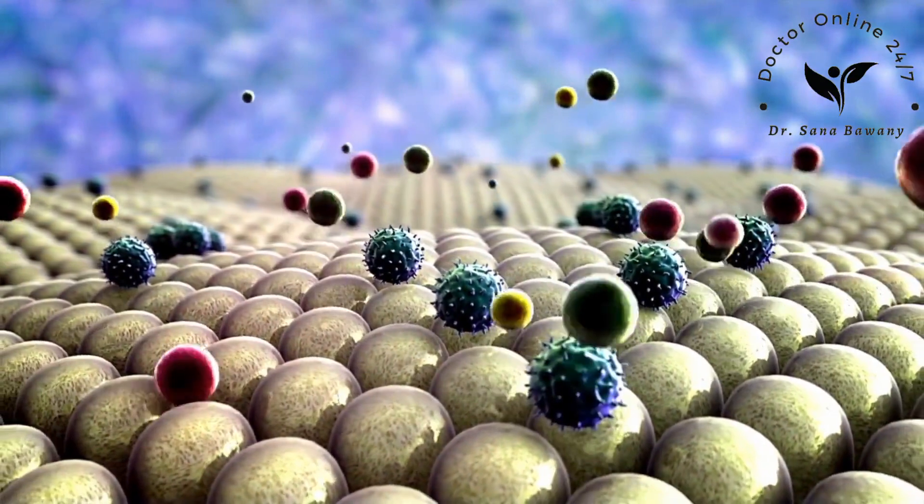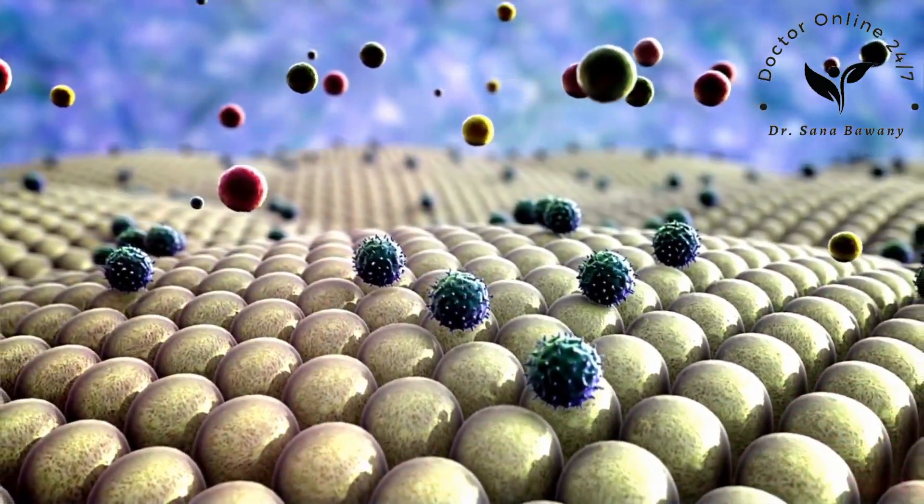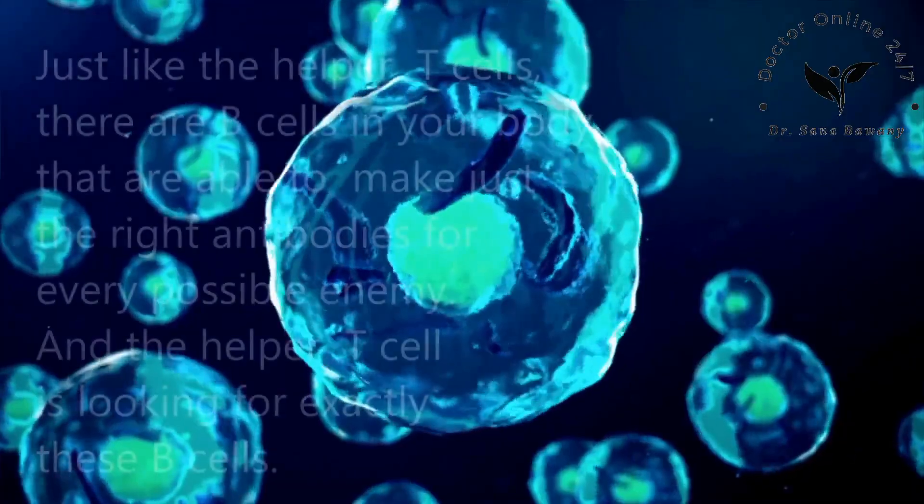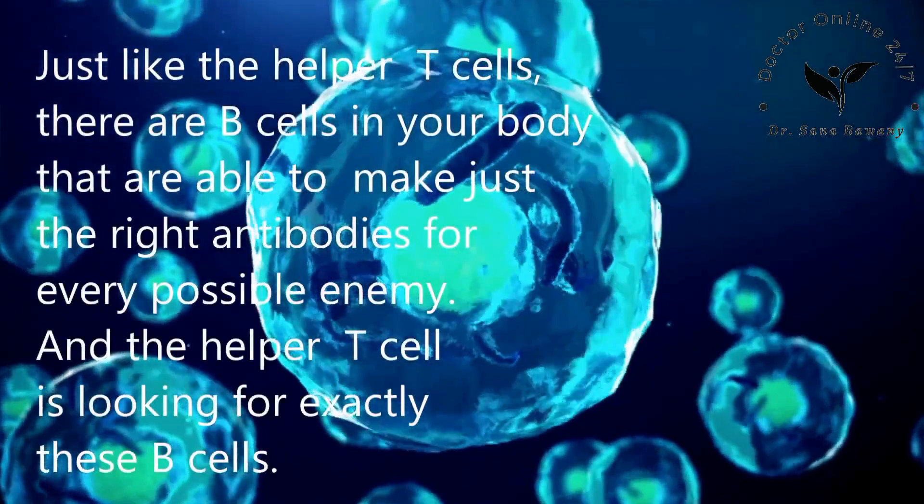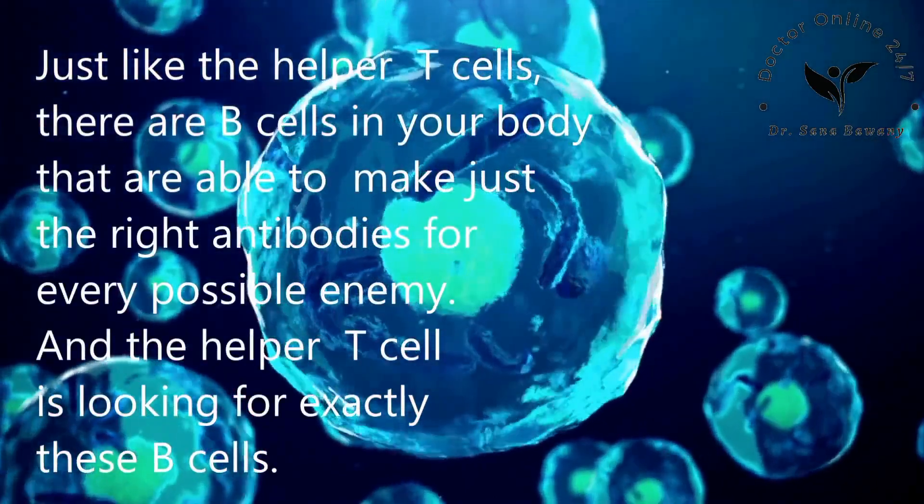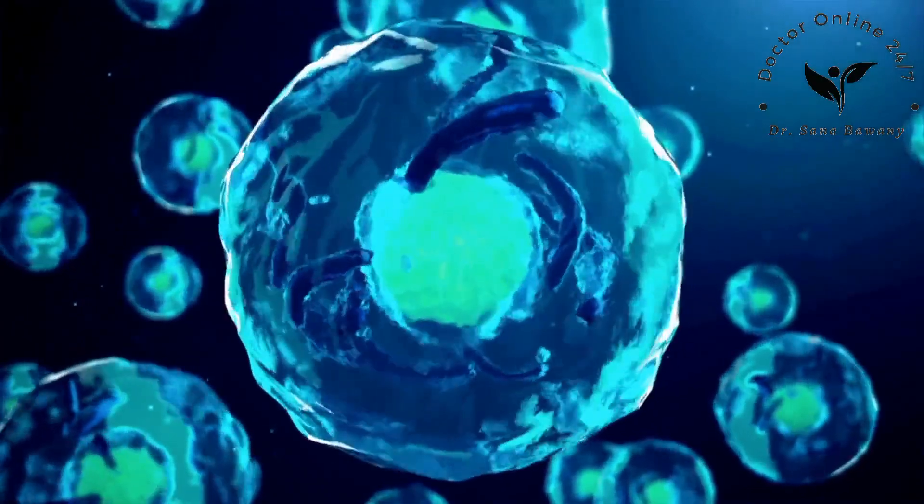Antibodies are protein super weapons that look like tiny crabs with two pincers to grab enemies. Just like the helper T cells, there are B cells in your body that are able to make just the right antibodies for every possible enemy.